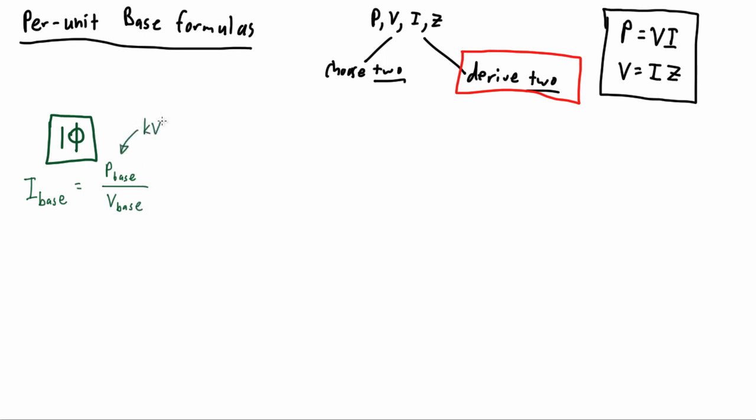As we said in our previous video, usually power and voltage are the given bases—the ones that you pick or that have been picked for you. You're left to derive current and impedance after that. If you have your power and voltage as given, you use those to derive your base current.